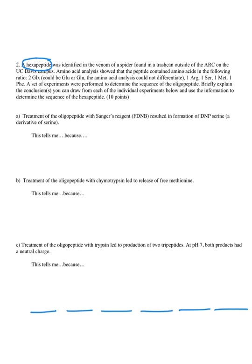It was identified and you did amino acid analysis and you found that you had two GLXs. They could either be two glutamates, two glutamines, or one glutamate and one glutamine, so you can't tell the difference between the two. You also have one arginine, one serine, one methionine, and one phenylalanine.